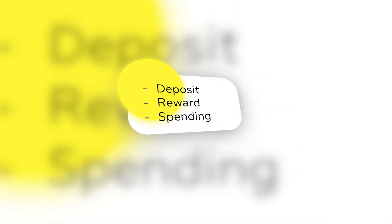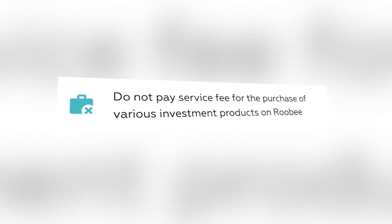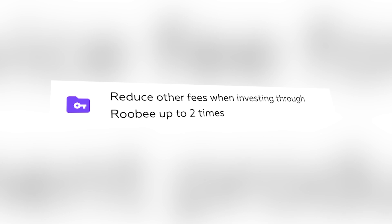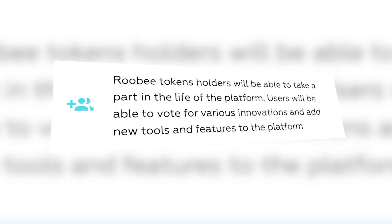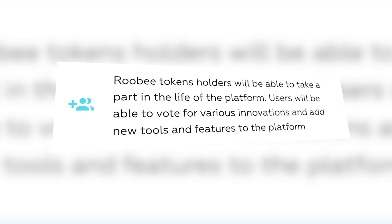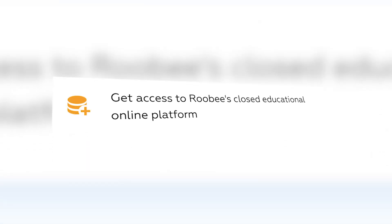In future, users will be able to store Ruby tokens in their Ruby wallet. The functionality of the Ruby token may include, but is not limited to, the following: receiving allocation in investment products with limited capitalization, accessing additional investment regimes, reducing transaction fees, gaining the possibility to rebalance the portfolio autonomously, and obtaining access to an advanced range of investment products within Ruby Market.